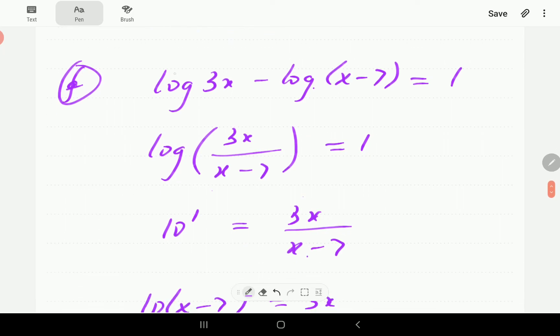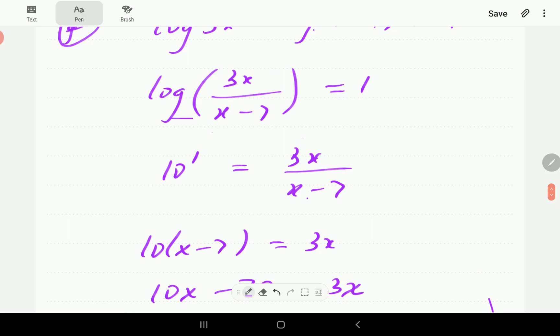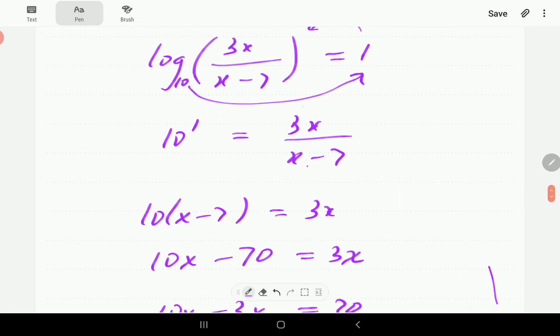This time, we've got common logs. We've got a difference of logs. So if we write this as a single log, it's going to be log of 3x over x minus 7. So the base here is 10. So write this in exponential form: 10 to the power of 1 must be equal to 3x over x minus 7.